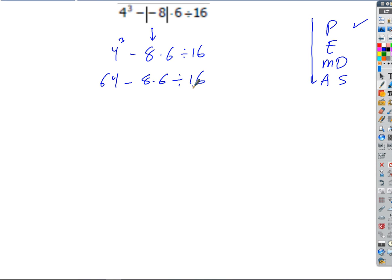Minus 8 times 6 divided by 16. Technically, we've got to do this in that order. What's next? Multiply and divide from left to right. So we have multiplication there. We get 64 minus, what's 8 times 6? 48. Divided by 16. So we've still got to do some division. What's 48 divided by 16? 3. So I get 64 minus 3 equals 61. That's a lot of steps.